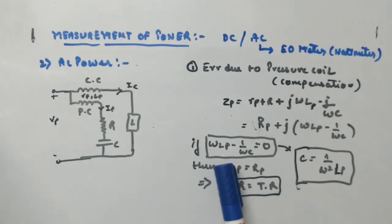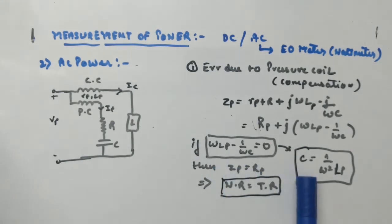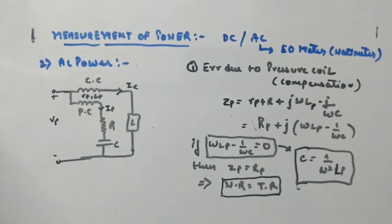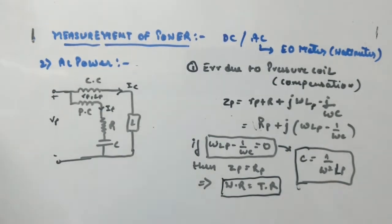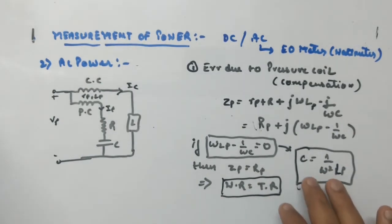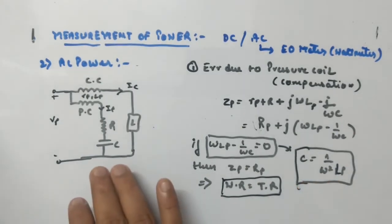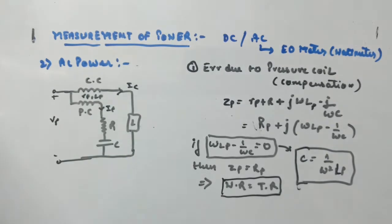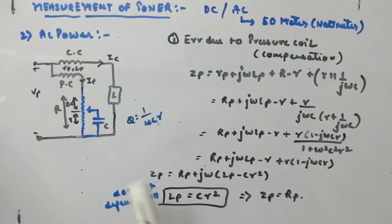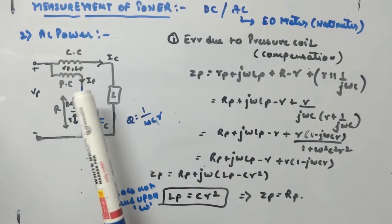In that case, C should be chosen as 1/(ω²Lp). But the problem is that since this relation depends upon frequency, we don't use this method much. There is a better way of using a capacitor to nullify the effect of the inductor, which we will see next. There is a better arrangement to nullify the effect of the inductor.